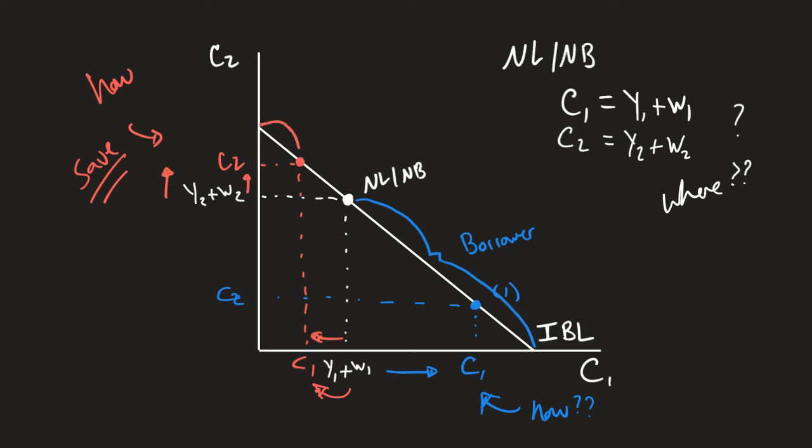So anything that's to the left of that no lending, no borrowing point, anything that's above that no lending, no borrowing point, we're going to say is a saver.